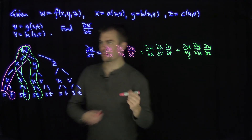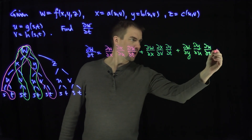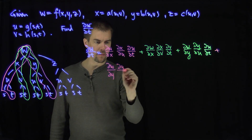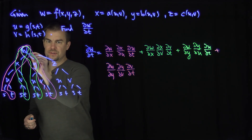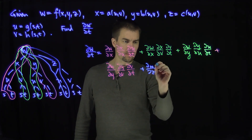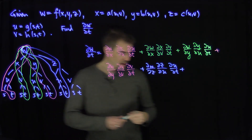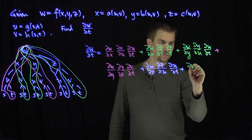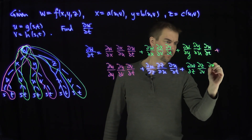Now we go to the z variables. Going from w to z, to u, and then u to t gives us (∂w/∂z)(∂z/∂u)(∂u/∂t). The last trajectory goes from w to z, to v, to t, giving (∂w/∂z)(∂z/∂v)(∂v/∂t).